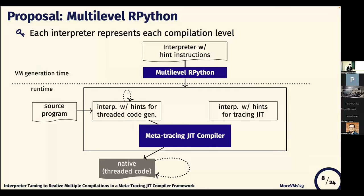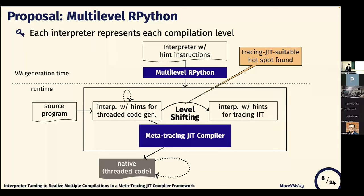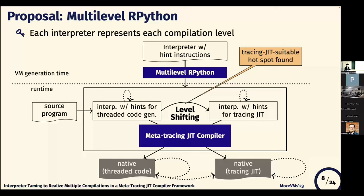After profiling runtime data, the meta-tracing compiler applies lightweight compilation — threaded code generation — to the program and generates native code. When a hotspot is found during interpretation on the threaded code interpreter, execution is switched to the tracing JIT interpreter. After profiling runtime data again, the tracing JIT compiler applies tracing compilation to the program and generates native code. Native codes from different compilation levels can go back and forth via on-stack replacement.